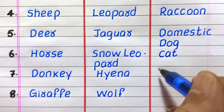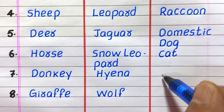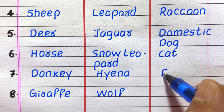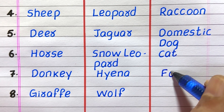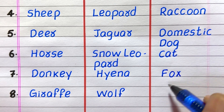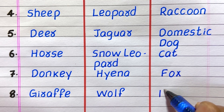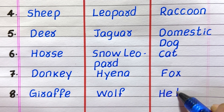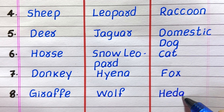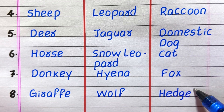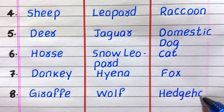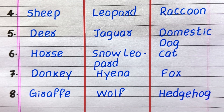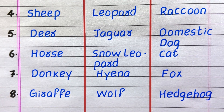Fourth example of an omnivore is raccoon, fifth domestic dog, sixth cat, seventh fox, eighth hedgehog.